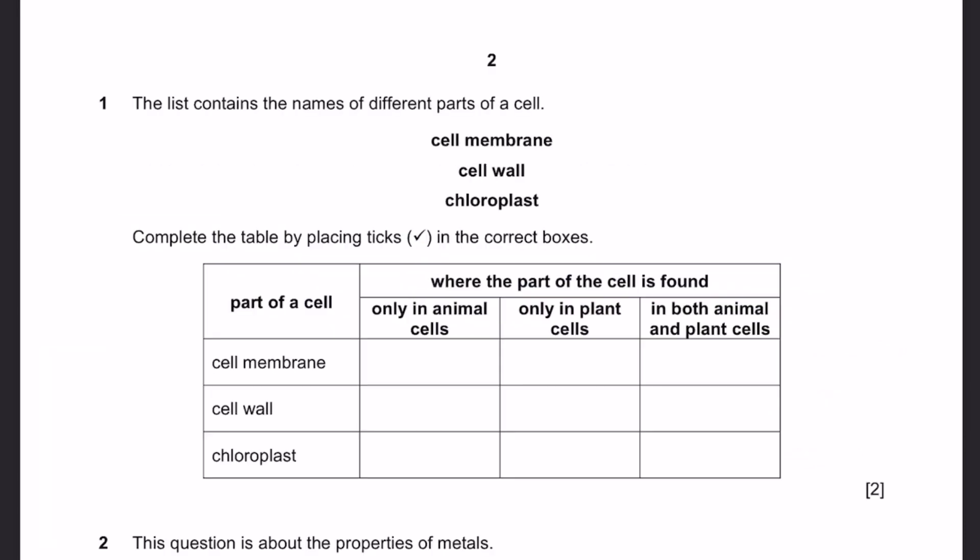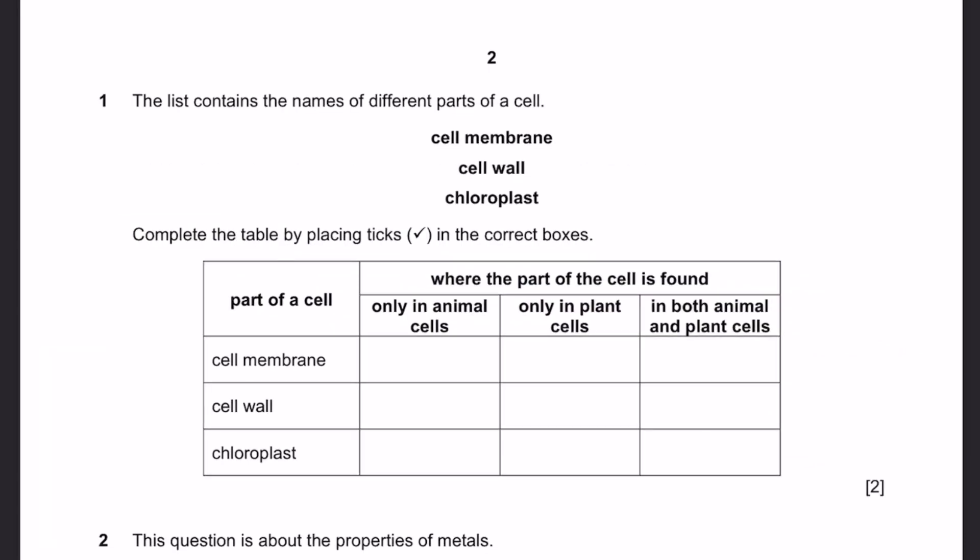Question 1. The list contains the names of different parts of a cell: cell membrane, cell wall, and chloroplast. Complete the table by placing ticks in the correct boxes.